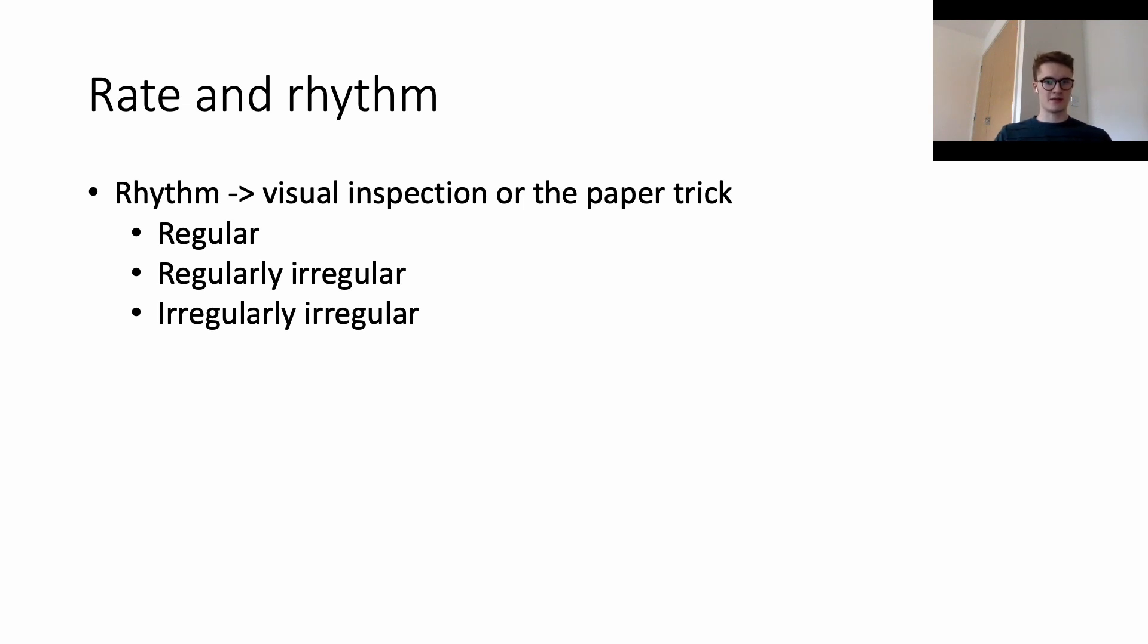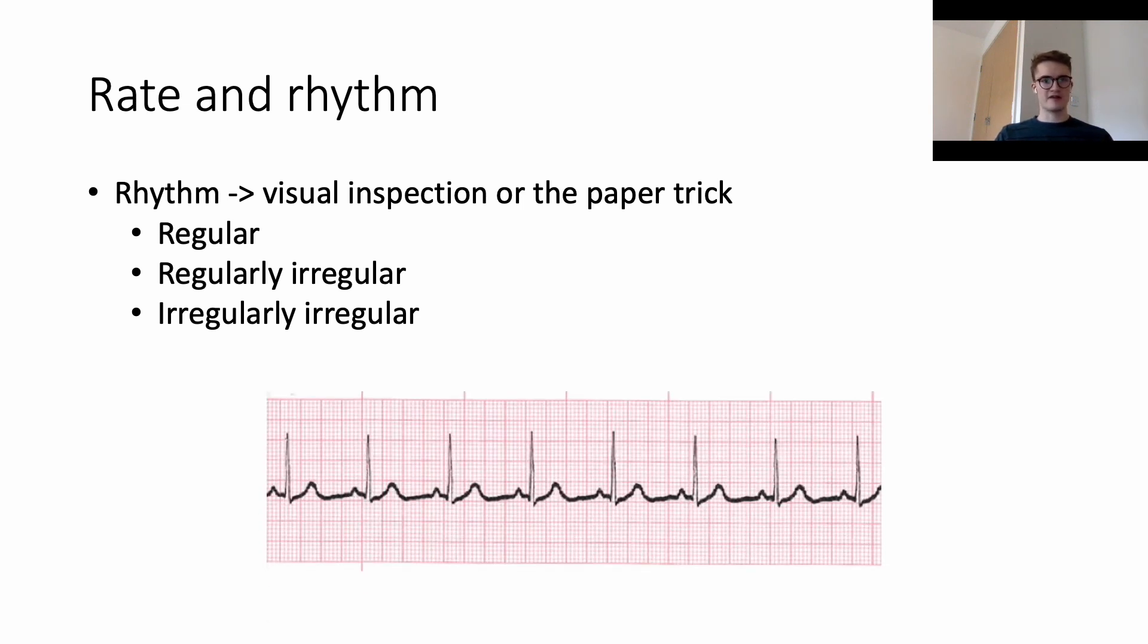Let's look at three examples now. This is the first example. On visual inspection, I would look at that and say it looks quite regular to me. I would say that the gaps in between the QRS complexes look quite even, so I'd say that's regular. We can check that with the paper trick. We've drawn an arrow representing the distance between these two QRS complexes, and then we move that across and see, does it match across the whole width? Yes, it does. That is a regular rhythm.